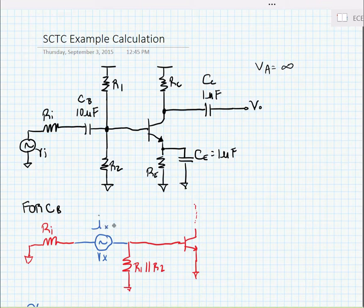And we're going to measure the current I sub X that flows through that voltage source. Now we note when looking into the base of the transistor, in this case because we don't have an emitter resistance, we see R pi.